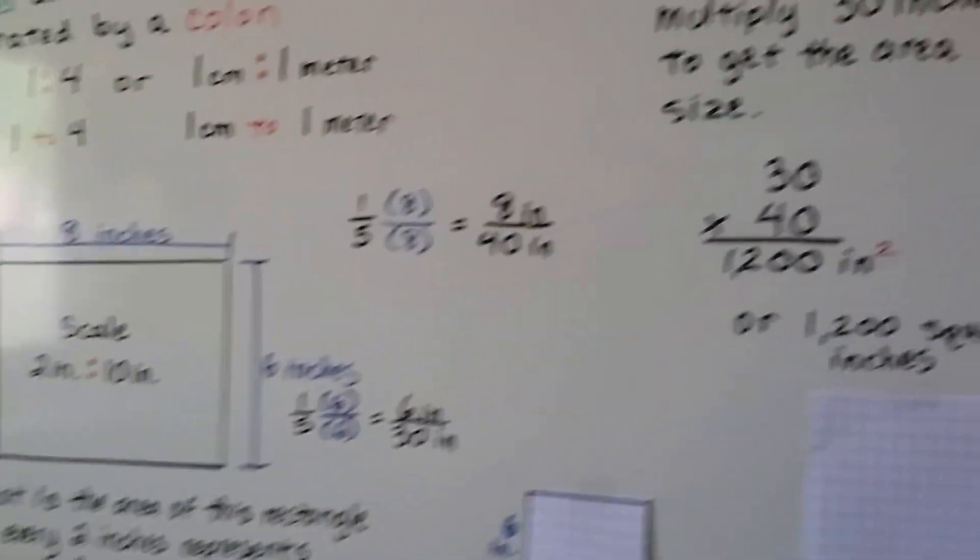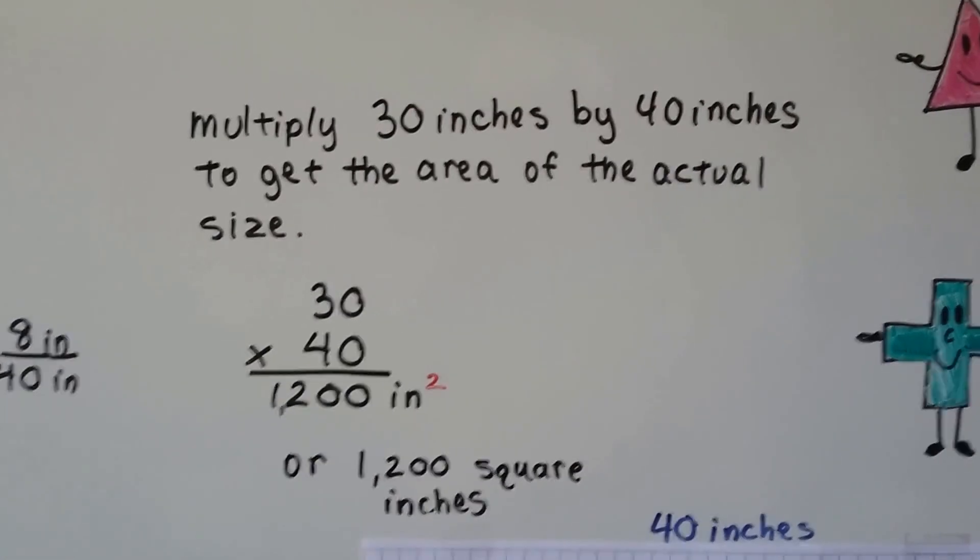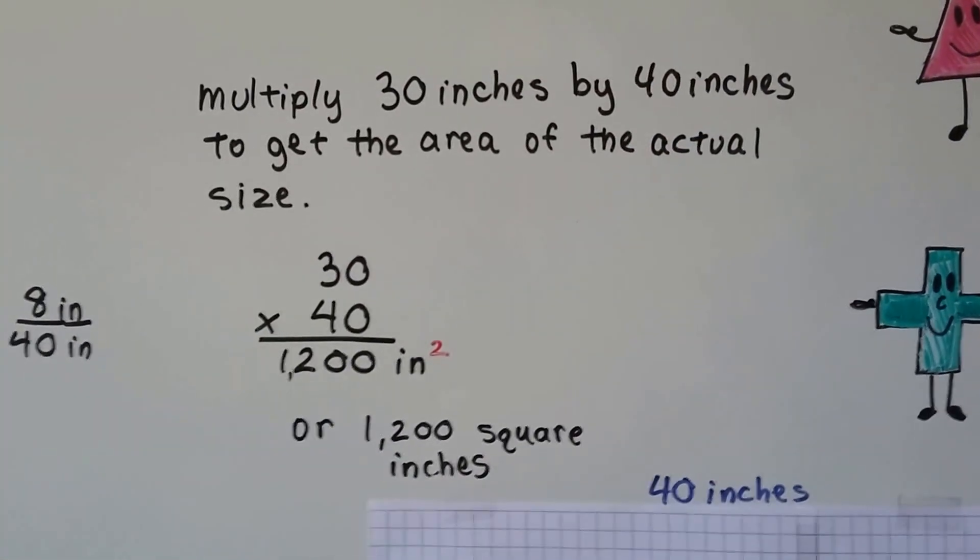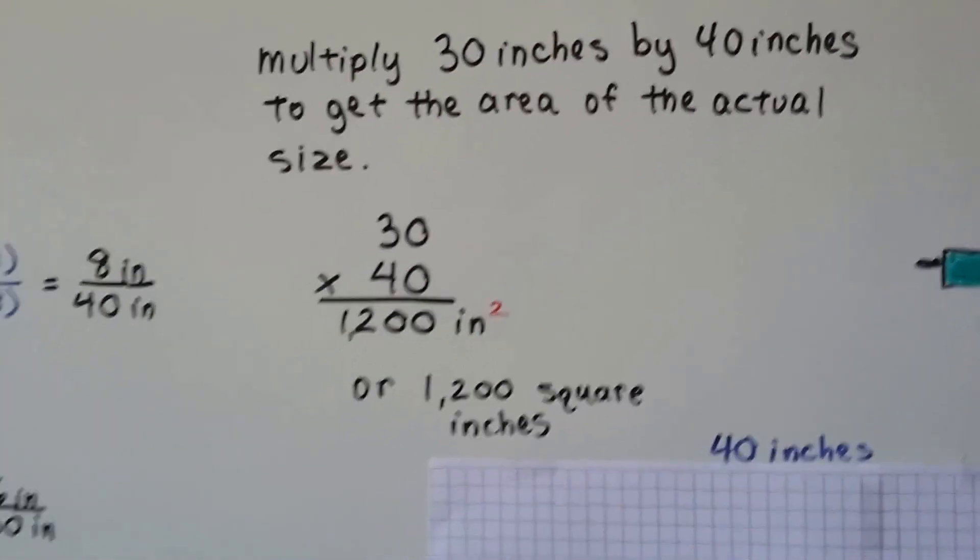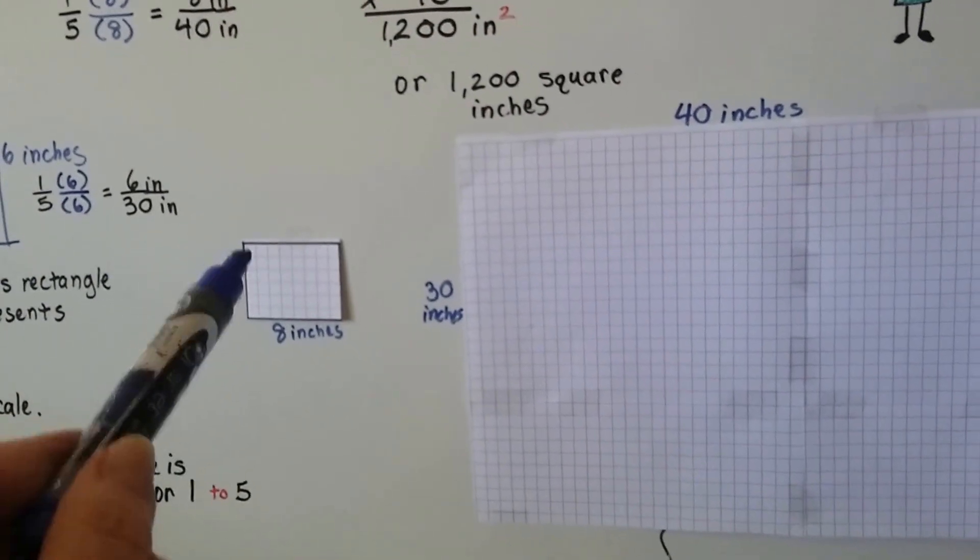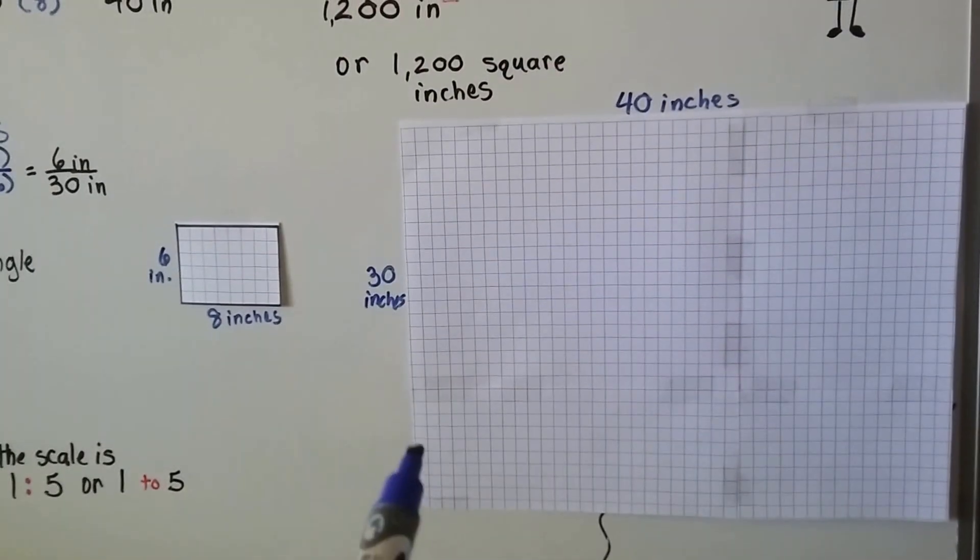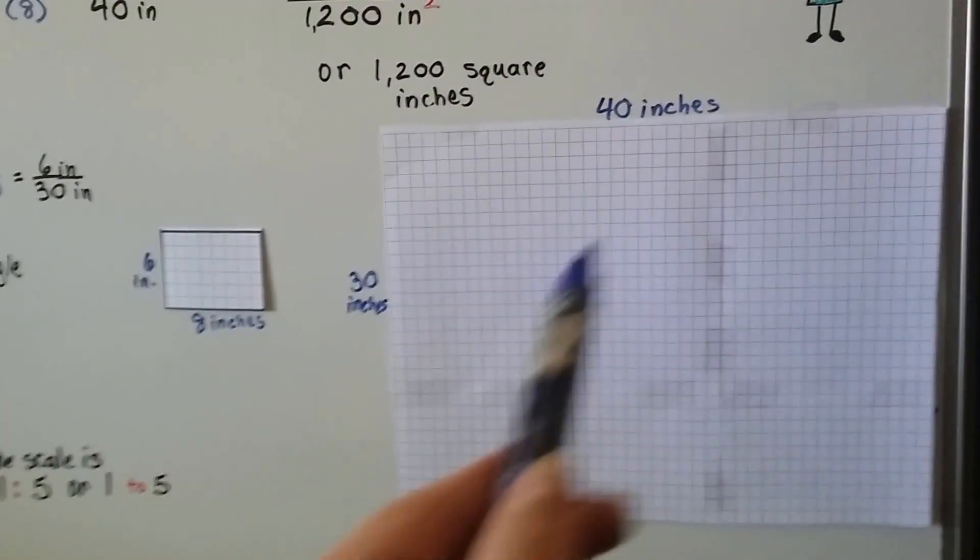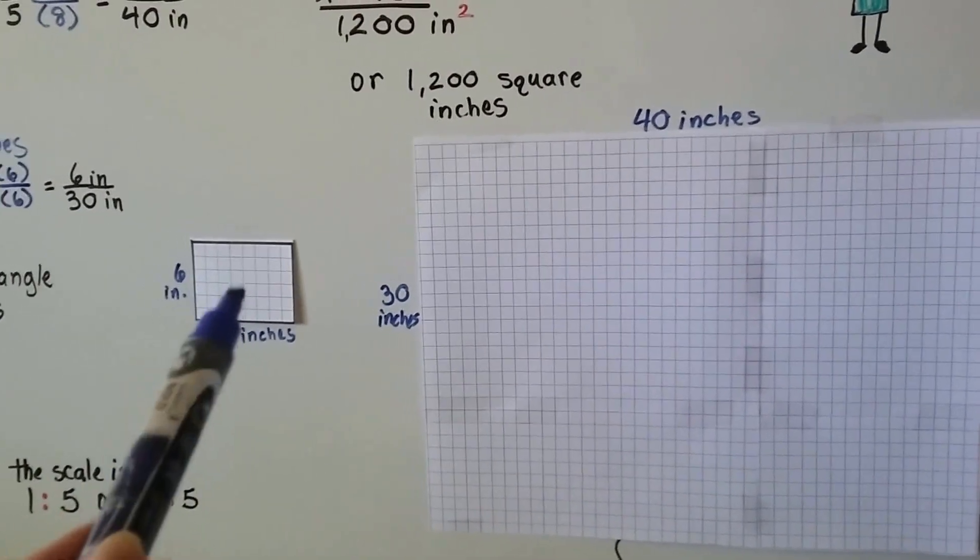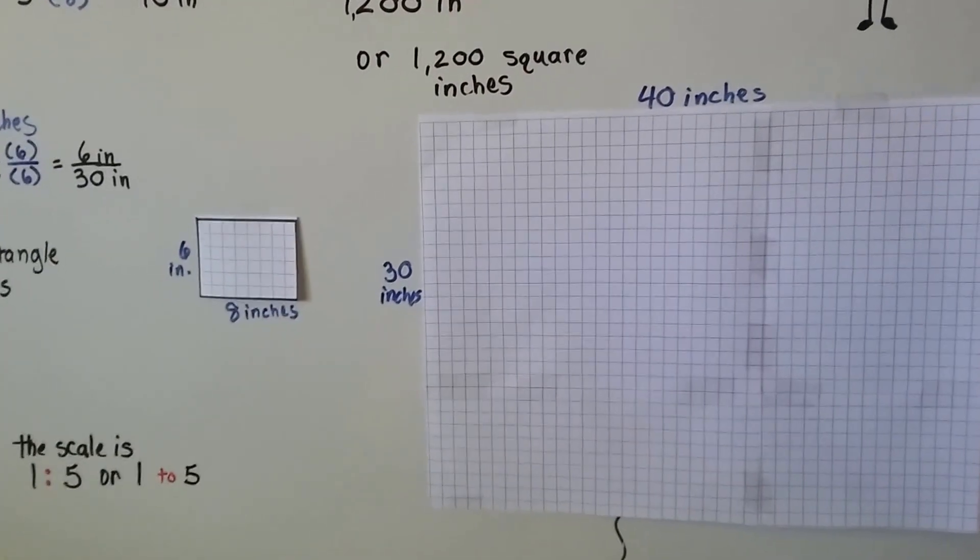Now all we have to do is multiply the length times the width. We multiply the 30 inches by the 40 inches to get the area of the actual size. 30 times 40 is 1200, and that would be inches squared, or square inches. So if it was 8 inches across and 6 inches going wide like this, it's actually representing 40 inches by 30 inches. So there would be 1200 little square inches like this. And maybe if they didn't have that much room to draw, they would use a scale to shrink it down so that it would fit into the drawing.